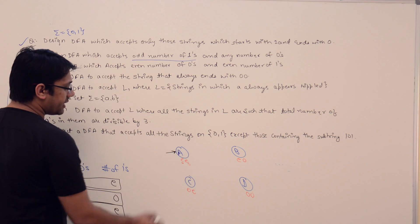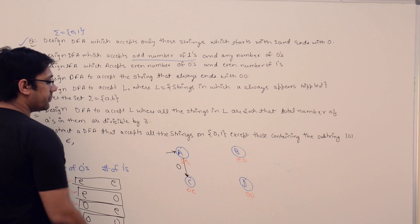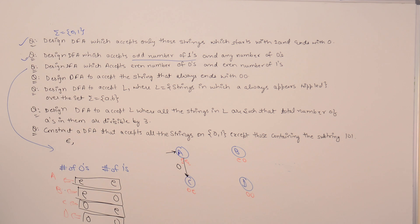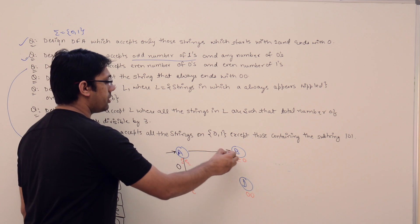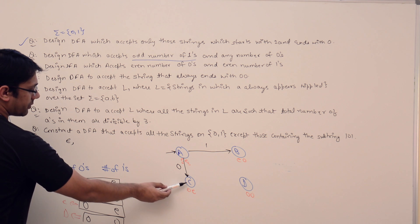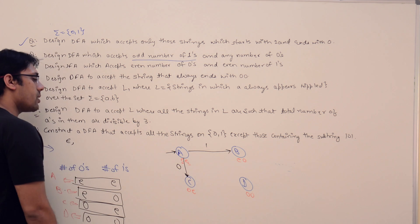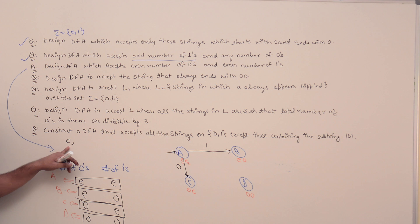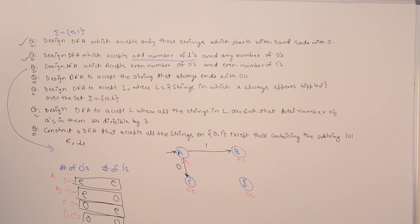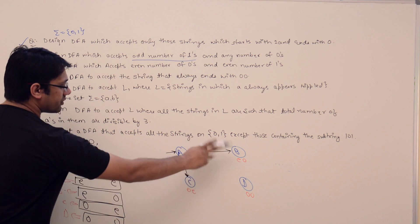At state A, if we get a 0, then the number of zeros becomes odd, so we move to state C. If we get a 1, then the number of ones becomes odd, so we move to state B. State C represents zeros odd and ones even; state B represents zeros even and ones odd.